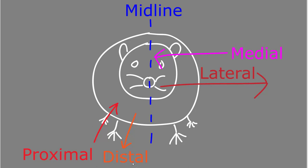Next are the terms proximal and distal. Proximal means toward the center of the body, and distal means away from the center of the body. These are particularly useful when talking about limbs because the limbs can be in different positions, but the terms proximal and distal will always hold. For example, the hip is proximal to the toes, and the toes are distal from the hip.